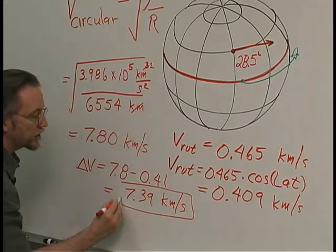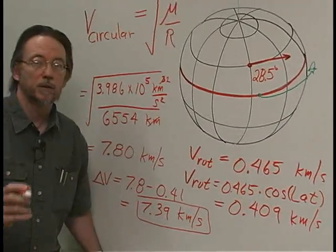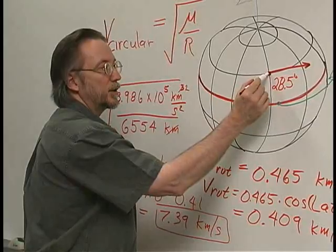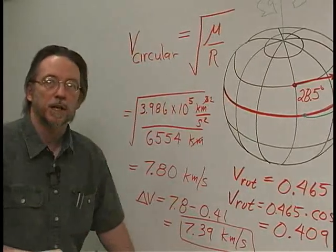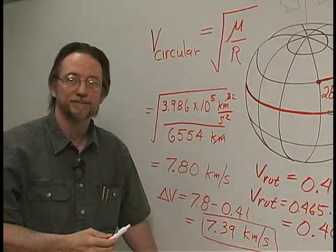So we have a considerable savings from this free ride that we get on the Earth, which adds to the speed we need to attain orbital velocity.